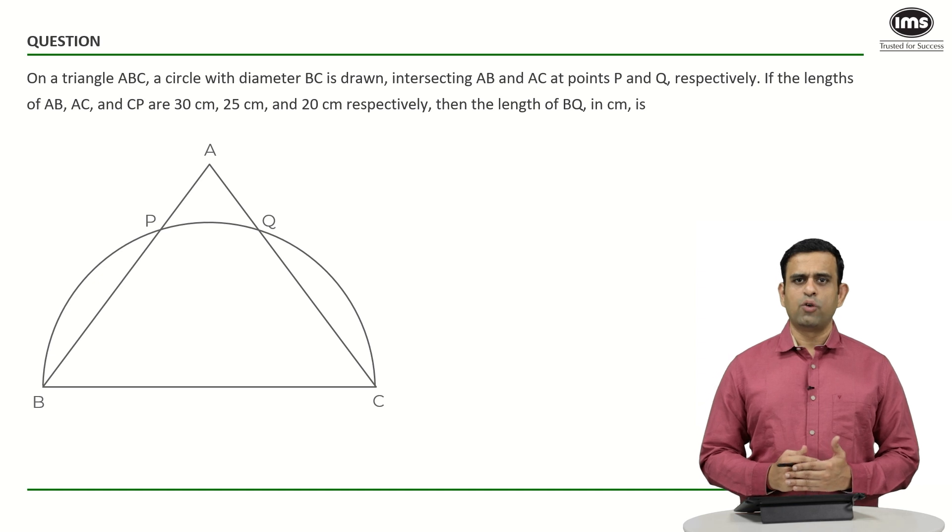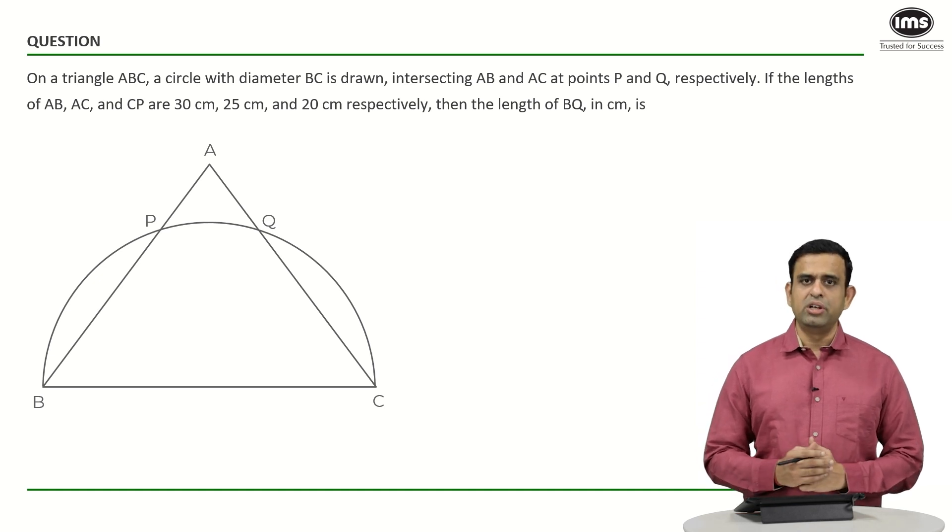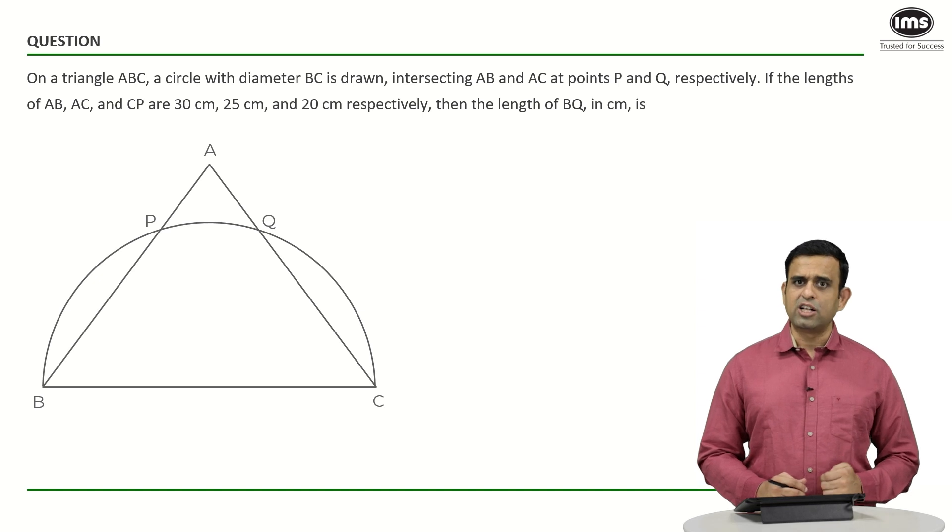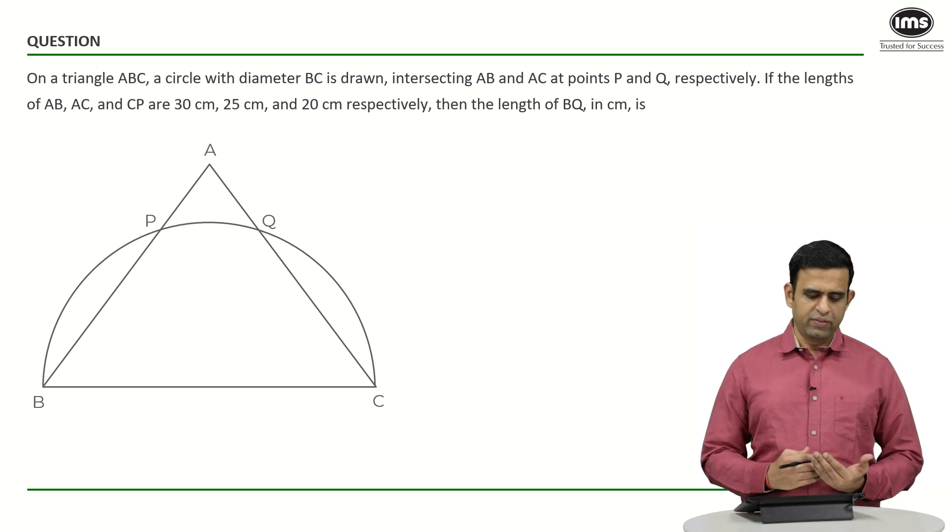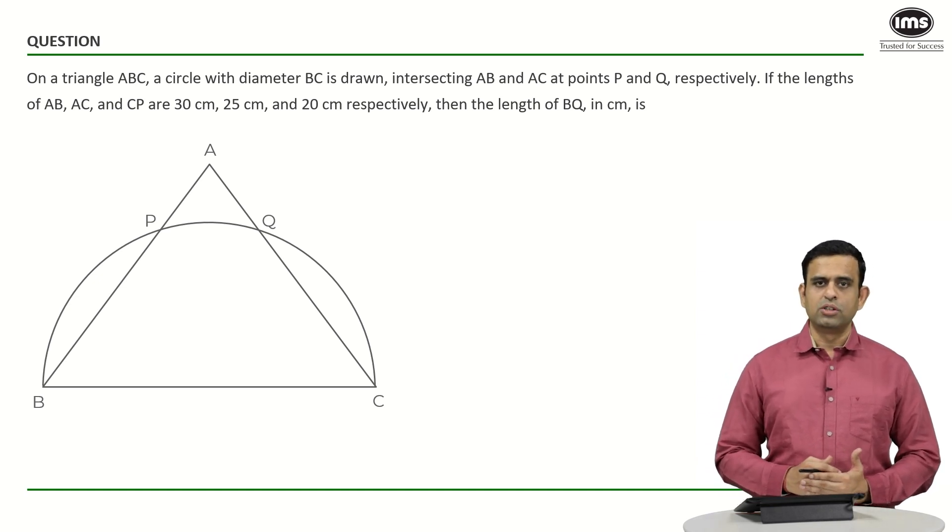You might say we can possibly apply the concept of secant theorem over here. You might say it has to be AP into AB equals AQ into AC, but there's no need to find out the value of AP and AQ over here.